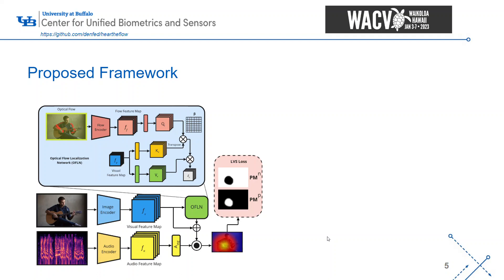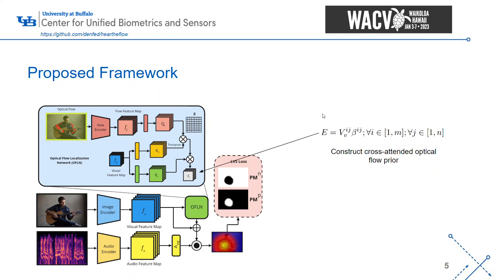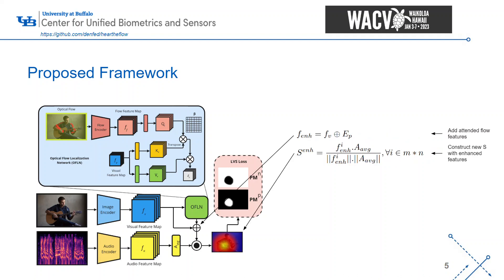When we add optical flow, we follow almost like a self-attention operation seen in transformer architectures — specifically a cross-attention — where we use features extracted from optical flow and the visual features to create an attended version of both. We create a cross-attention matrix of flow and visual feature representations, construct the final cross-attended optical flow feature, or prior, and then add it back into the original visual features to construct an enhanced similarity matrix, or localization map, with these optical-flow-attended features.